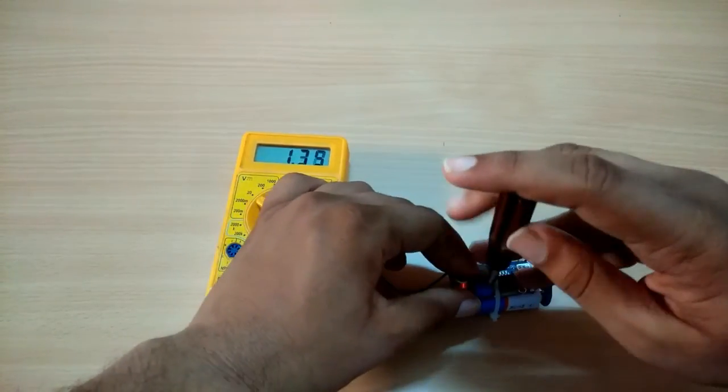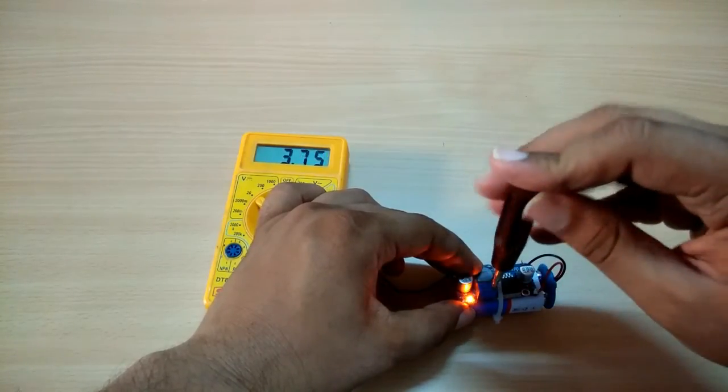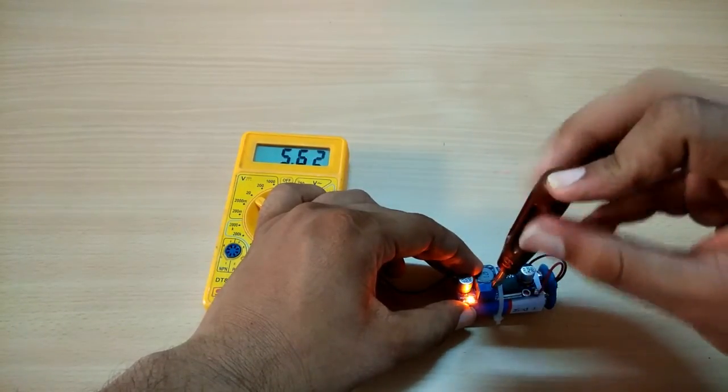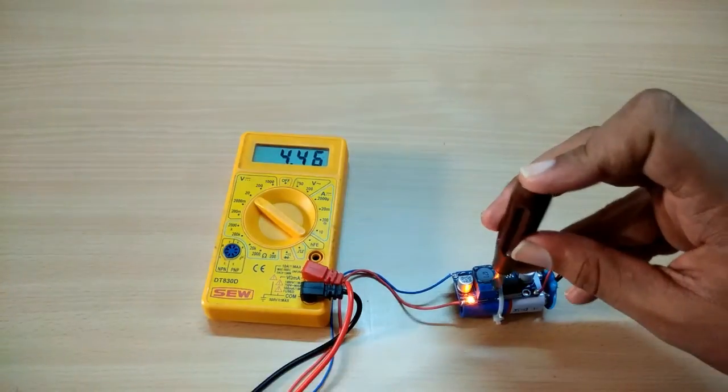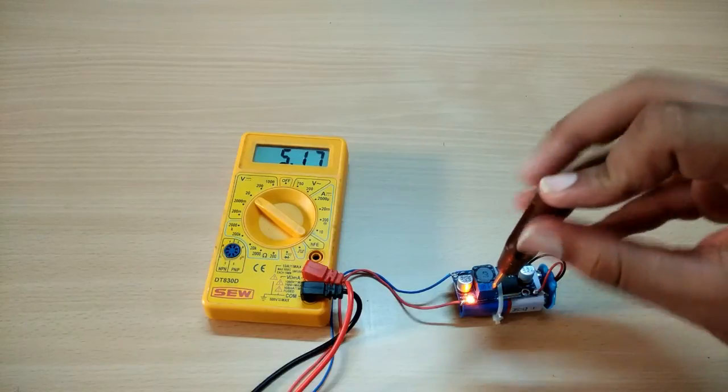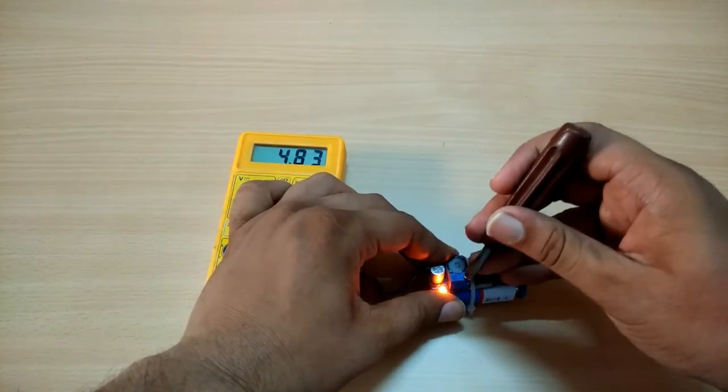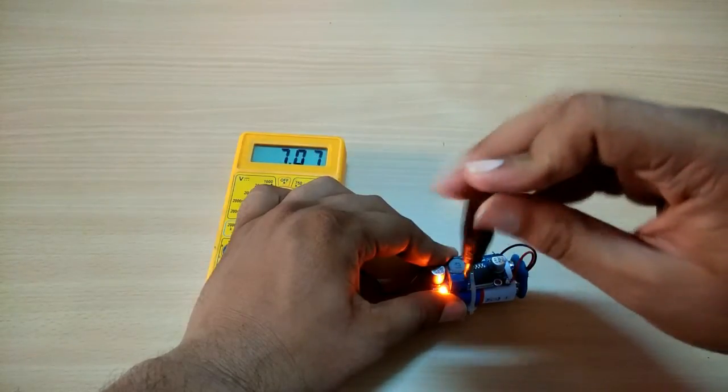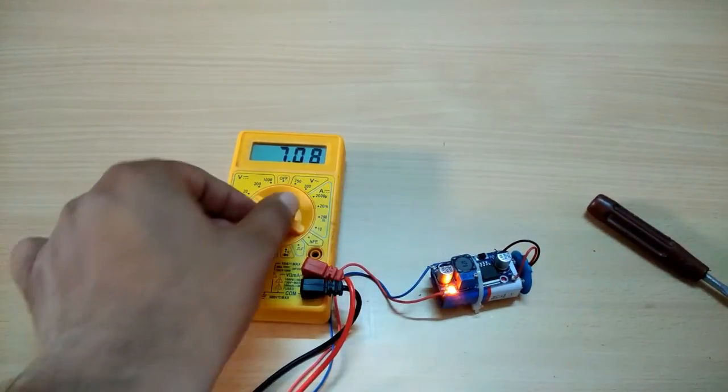See, the voltage is rising when you turn the potentiometer in clockwise direction. In this way you can vary the voltage of the output. The maximum voltage it can obtain is up to 7.8 volts.